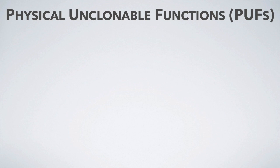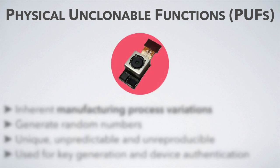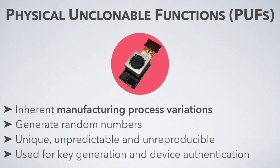Physical unclonable functions, also known as PUFs, have been proposed to extract a unique digital fingerprint from devices by exploiting randomness caused by inherent manufacturing process variations. Therefore, PUFs are suitable for generating unique and unpredictable random numbers that could be used for key generation and device authentication.